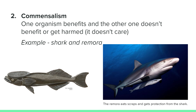Commensalism is a relationship where one organism benefits and the other doesn't benefit or get harmed — so it doesn't care. An example of this is the shark and remora. The remora clings to the bottom of the shark by a suction cup on top of its head, and can easily detach from the shark to eat the scraps. This type of symbiosis can be identified as plus-zero since one benefits and the other is neither harmed nor helped.